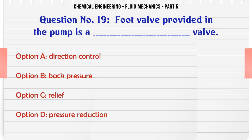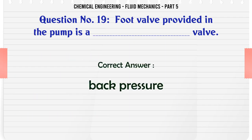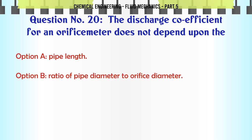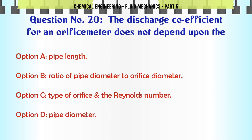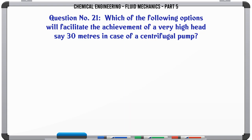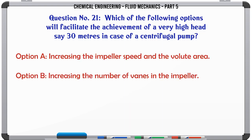The discharge coefficient for an orifice emitter does not depend upon the: a) pipe length, b) ratio of pipe diameter to orifice diameter, c) type of orifice, the Reynolds number, d) pipe diameter. The correct answer is pipe length.